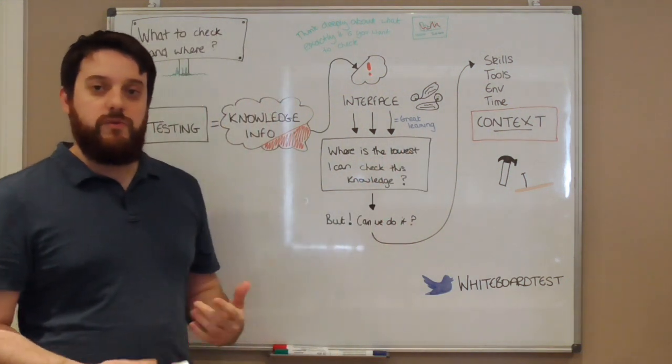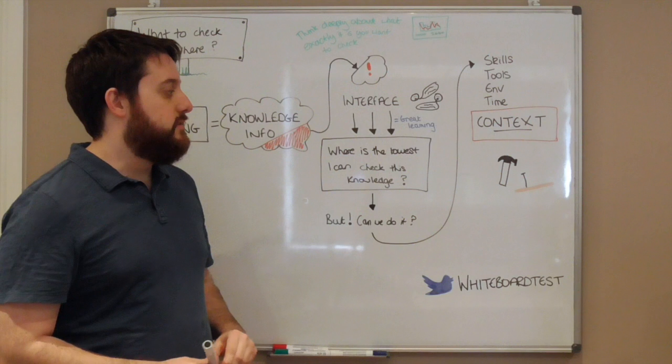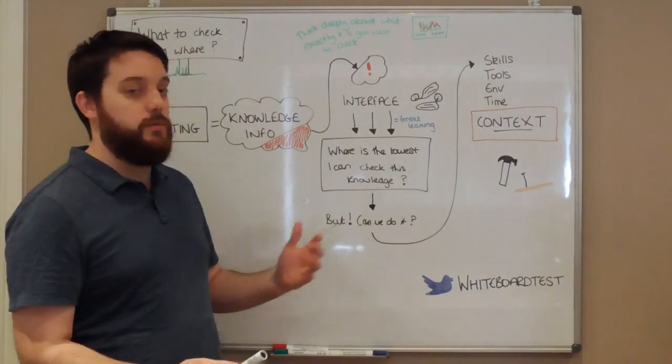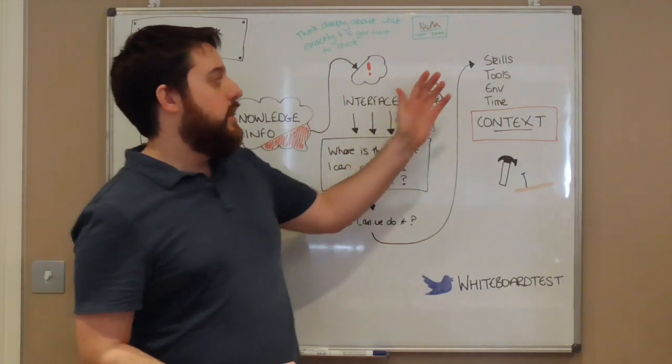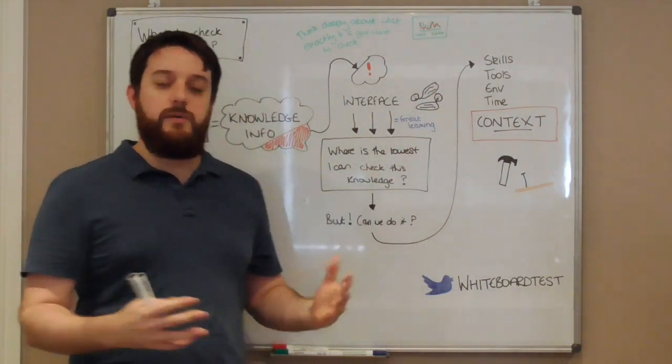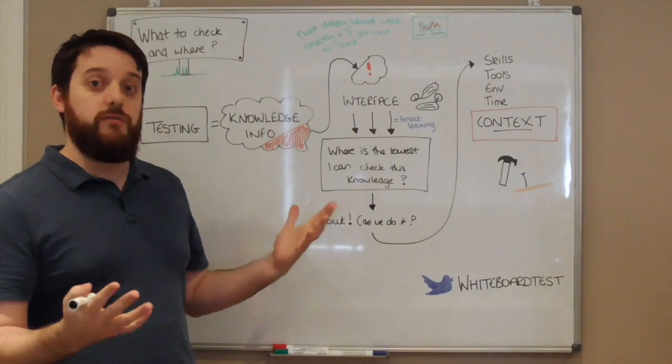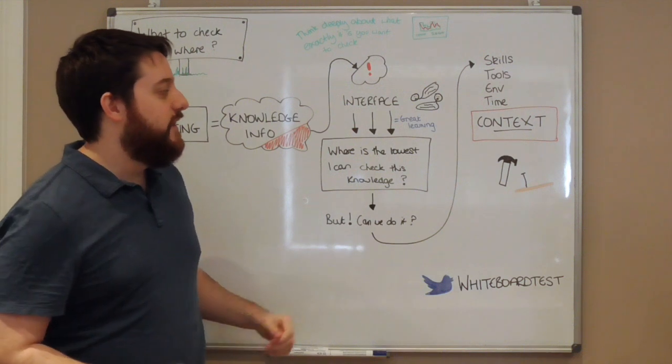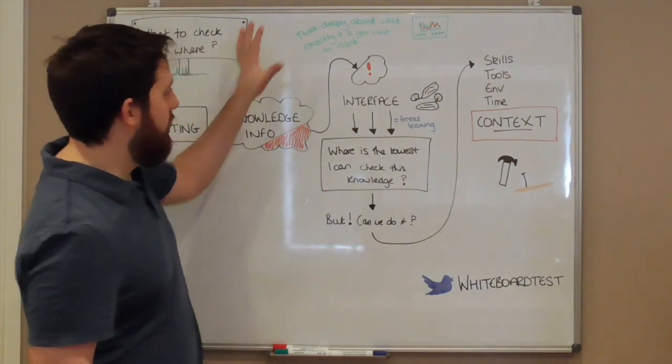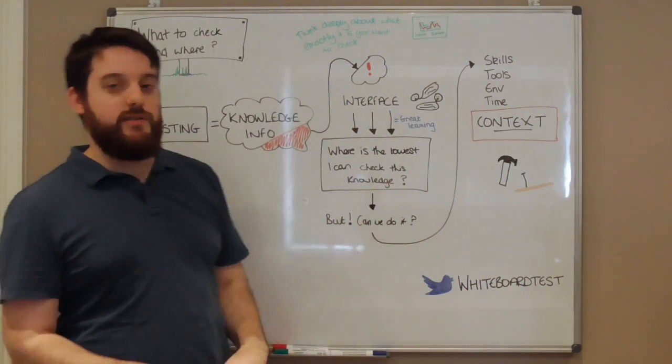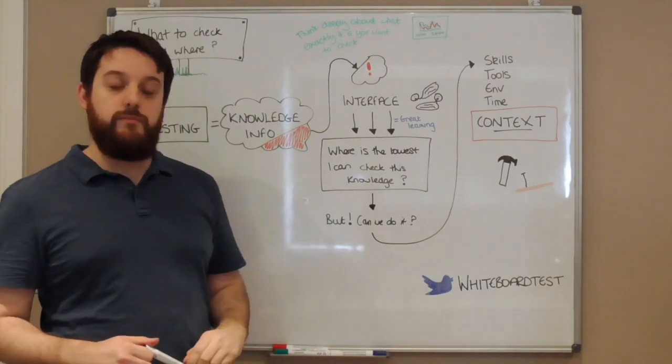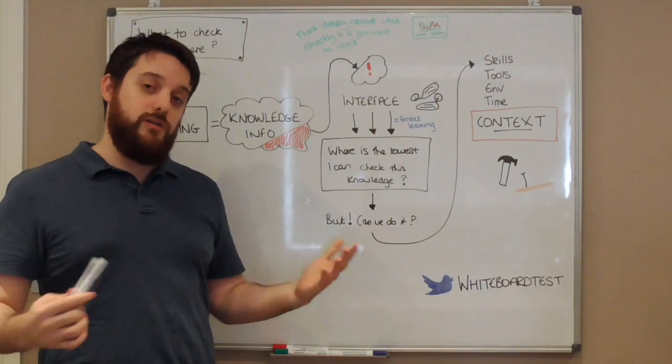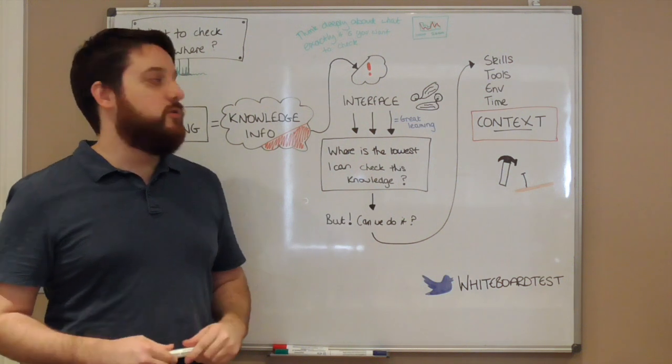One of my biggest bugbears with the automated checking and testing world is people's obsession with certain tools. Even if you do this process and the only skillset you have happens to be a certain tool, let's say WebDriver for example, regardless of the outcome of this, it will always look like a nail. Because you've got a hammer and you know that if that looks like a nail, you can do it. You keep your job and everything goes on nicely.